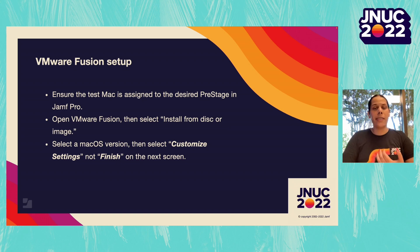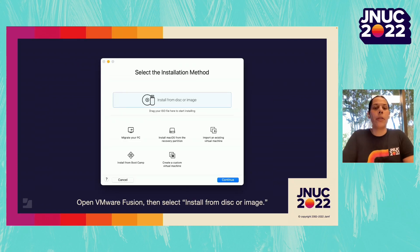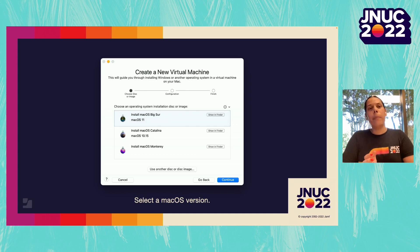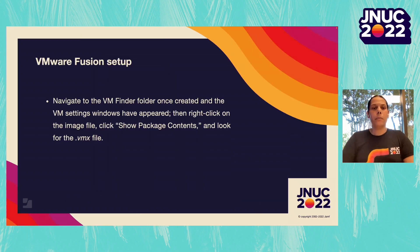You want to make sure that the machine is assigned to the PreStage in Jamf Pro. We're going to open VMware Fusion and select Install from Disk or Image. Unlike Parallels Desktop, there are fewer errors with VMware Fusion when using any of the app installers downloading from the App Store, so here you can use either method. When you see the final setup window, click Customize Settings instead of Finish — so that we can find the VMware file and edit it to add a similar template like we did with Parallels Desktop.